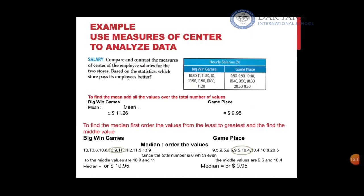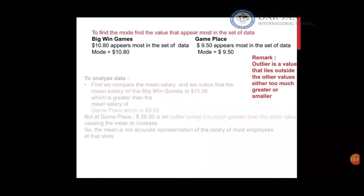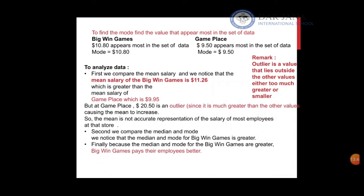Since Game Place has the outlier 20.50, the mean is not an accurate representation of the salary of most employees. We'll compare using median and mode instead. The median for Big Win Games is $10.95, which is higher than Game Place's median of $9.95. The mode for Big Win Games is $10.80, higher than Game Place's $9.50. In both measures, Big Win Games pays its employees better than Game Place. Whenever there's an outlier, disregard the mean and use the median and mode.